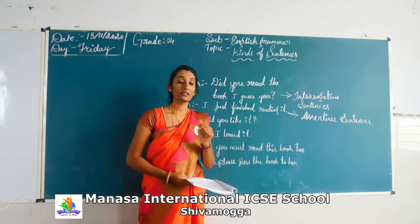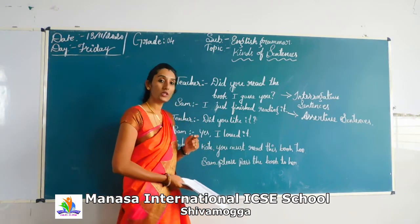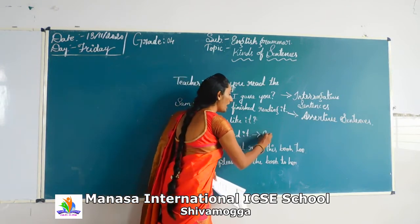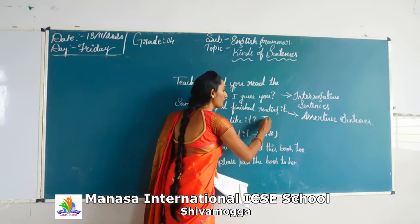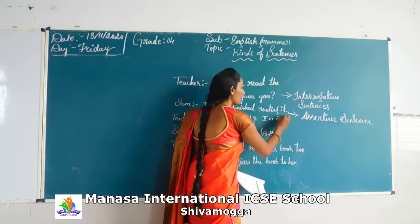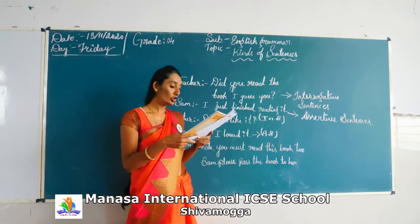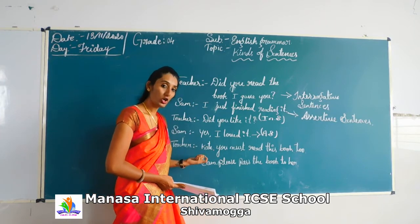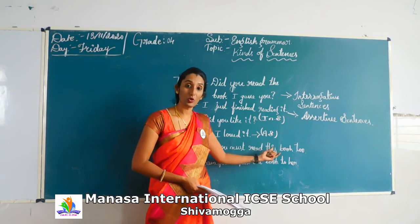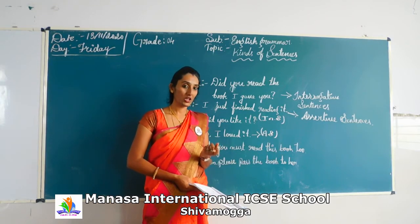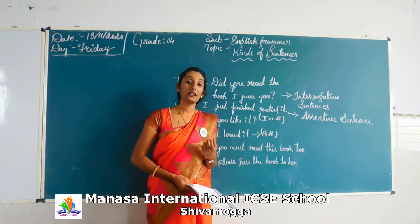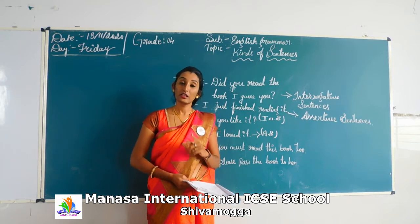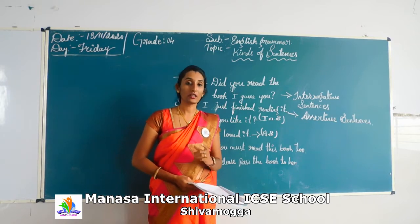One more assertive sentence example is here — 'Yes, I loved it.' So this is also an assertive sentence. Assertive sentence means telling about something or making a statement. So the next one in the conversation is 'You must read this book too.' The way this sentence is written, that is ordering — that is an ordering sentence.